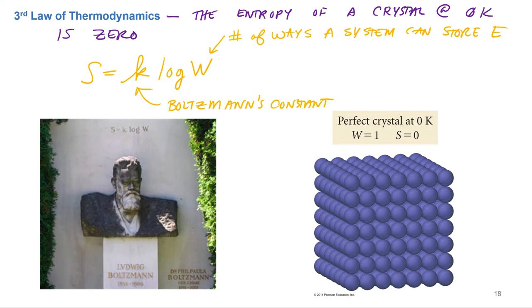Now if you're a crystal, a solid at zero Kelvin, how many ways can you store energy? Well it turns out only one, your potential energy, since you have zero kinetic energy, all you have is potential energy. So there's only one way you can store your energy, so W equals one. At zero Kelvin, W equals one.